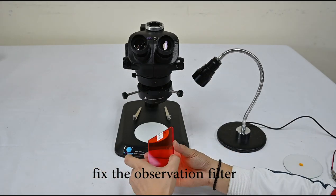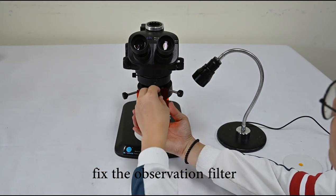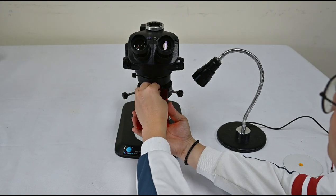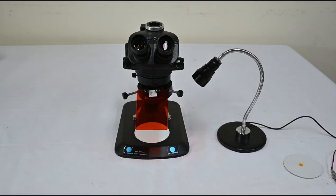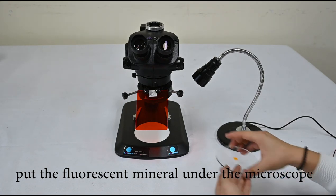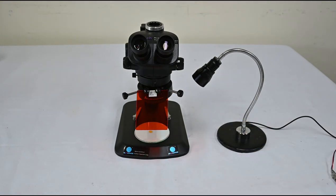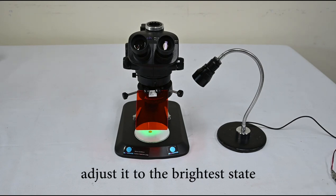Third, fix the observation filter. First, put the fluorescence mirror under the microscope. And last, turn on the power and adjust it to the brightest state.